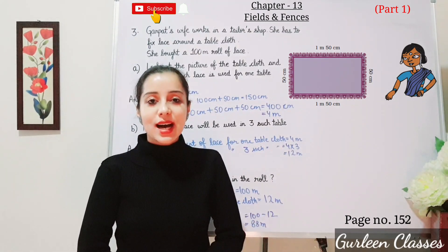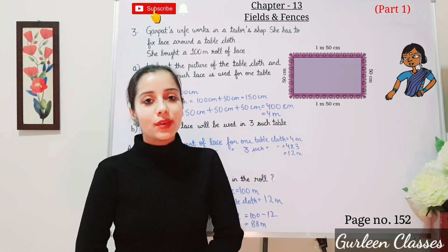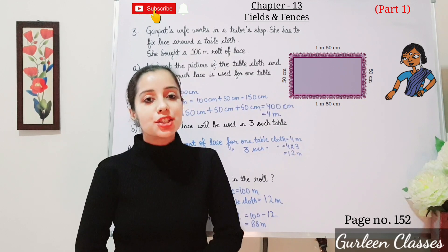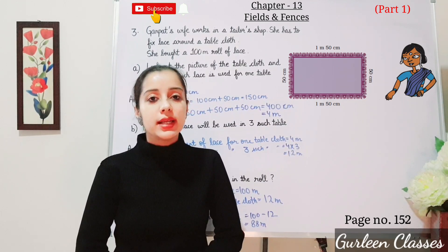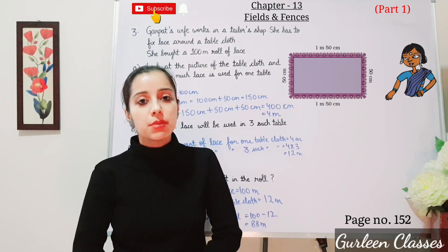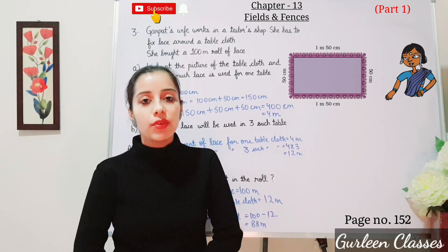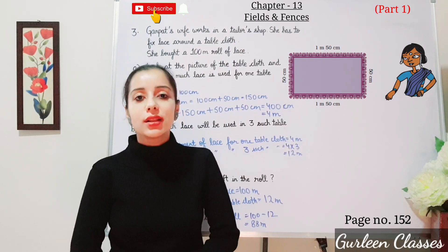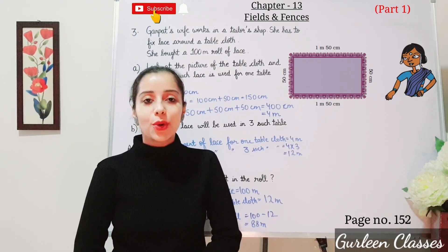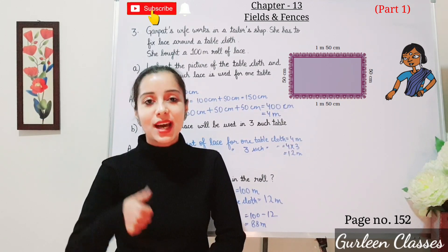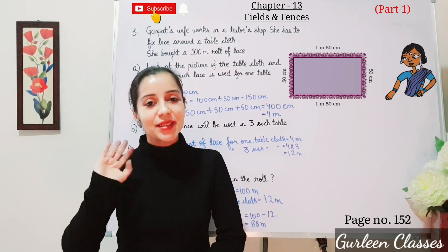That's all for today's class. Chapter number 13, part 1 — NCRT book questions from page number 149 to 152 — we have completed. Practice all these questions at home and we will continue in our next class. Do like, share, and subscribe to my channel. Take care, bye-bye.